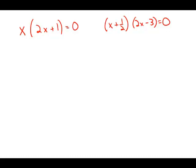We're given these two algebraic equations: x times quantity 2x plus 1 equals 0, and quantity x plus 1 half times quantity 2x minus 3 equals 0, and we're asked to solve for x.